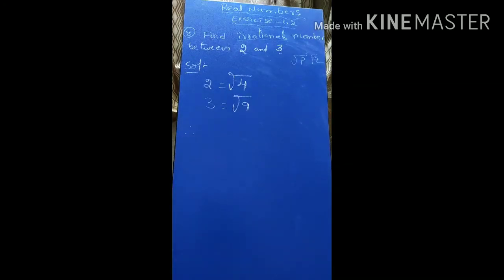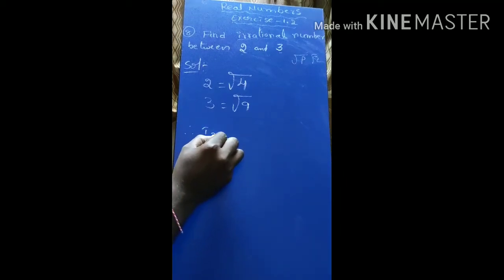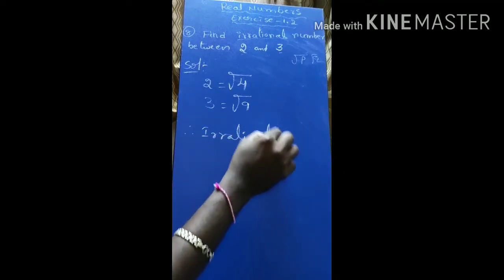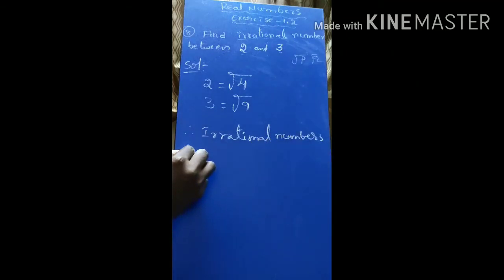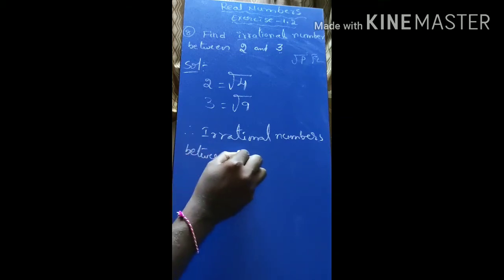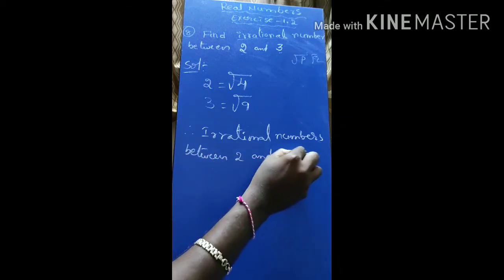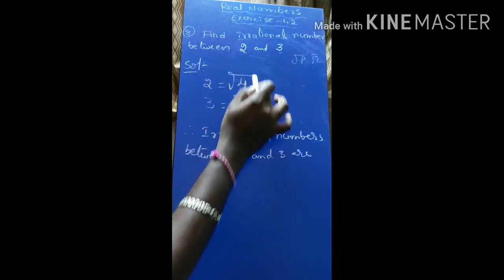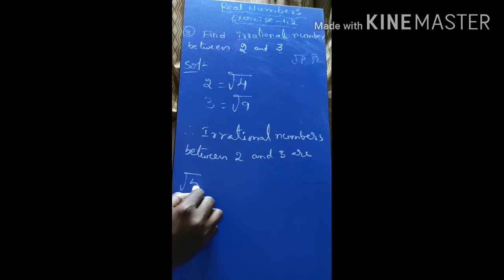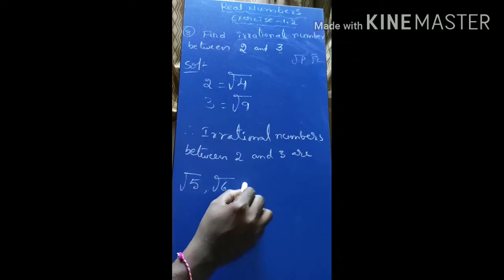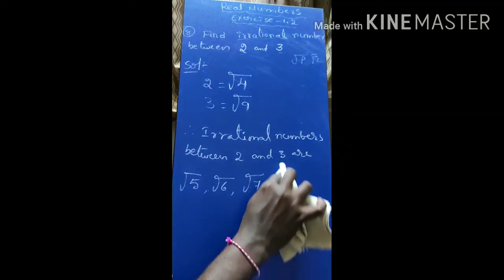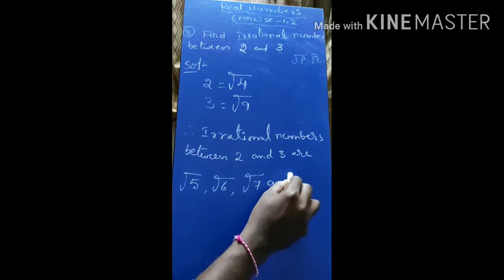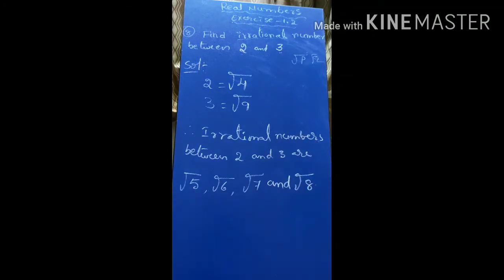Therefore, the irrational numbers between 2 and 3 are the irrational numbers between root 4 and root 9. After root 4 we have root 5, root 6, root 7, and root 8. These are the four irrational numbers between 2 and 3.